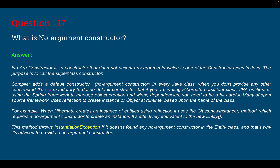For example, when Hibernate creates an instance of an entity using reflection, it uses the Class.newInstance() method, which requires a no-argument constructor. It is effectively equivalent to new Entity(). This method throws InstantiationException if it does not find a no-argument constructor in the entity class, which is why it is advisable to always provide a no-argument constructor.